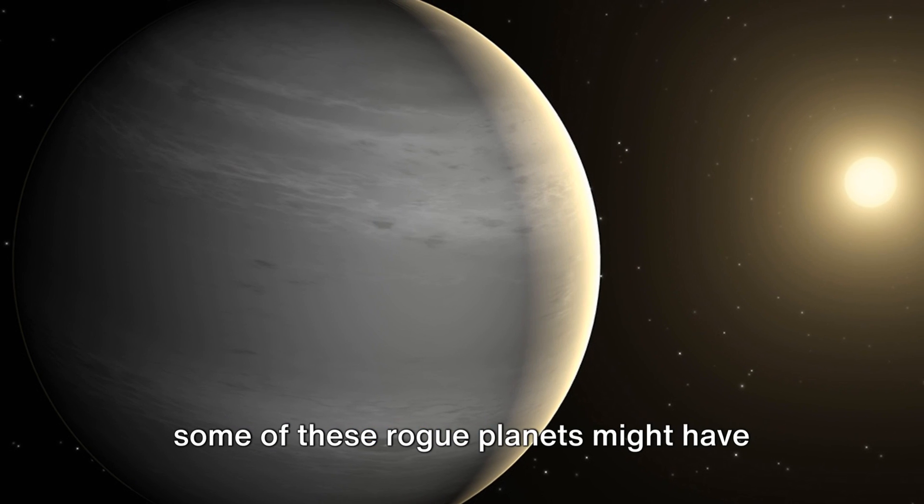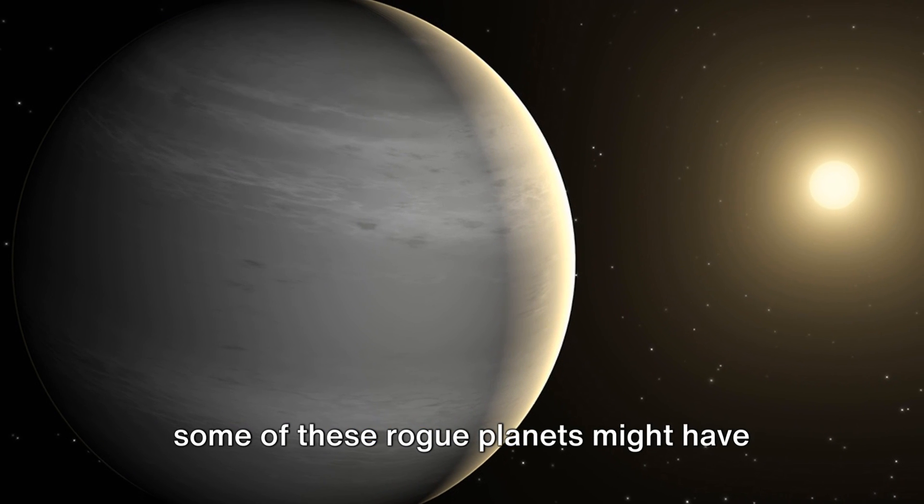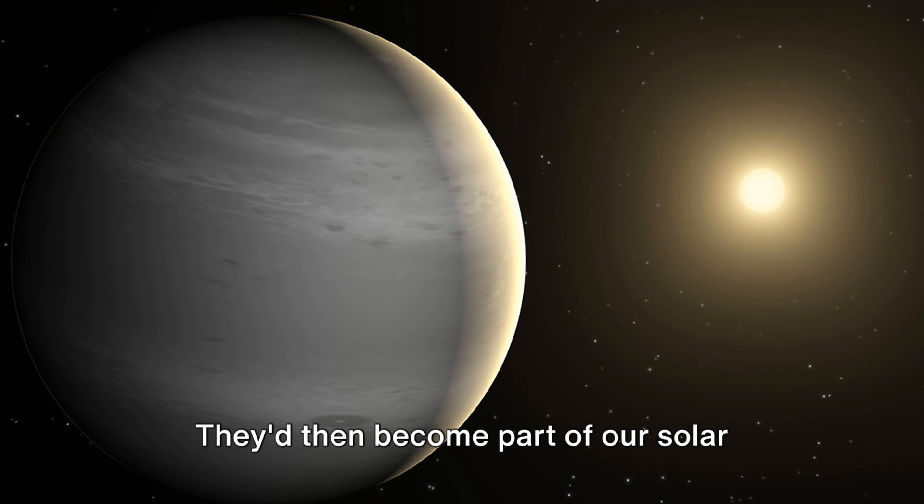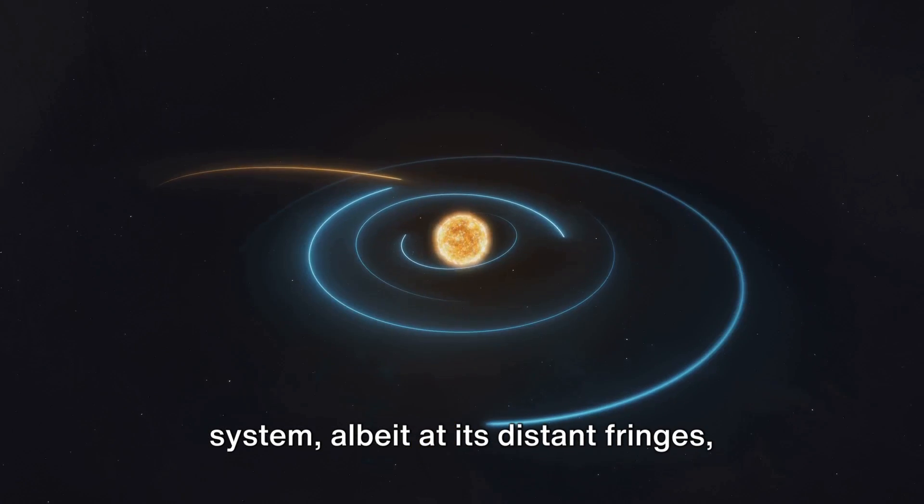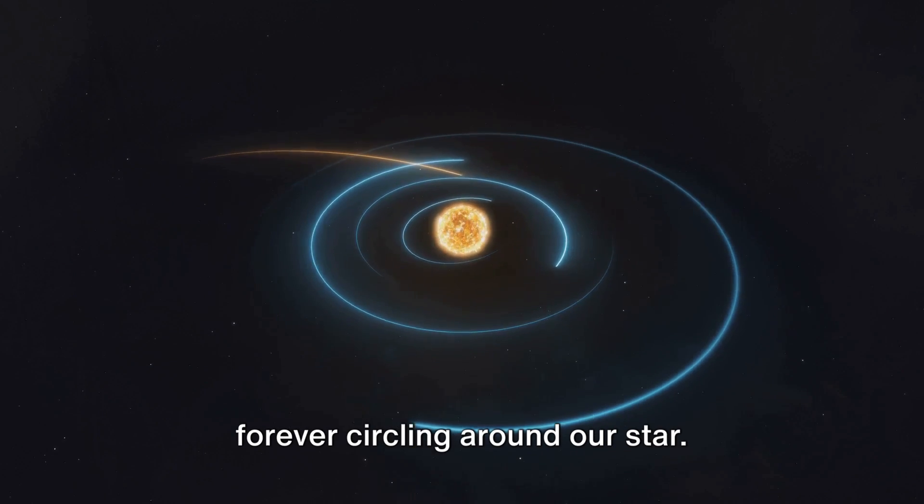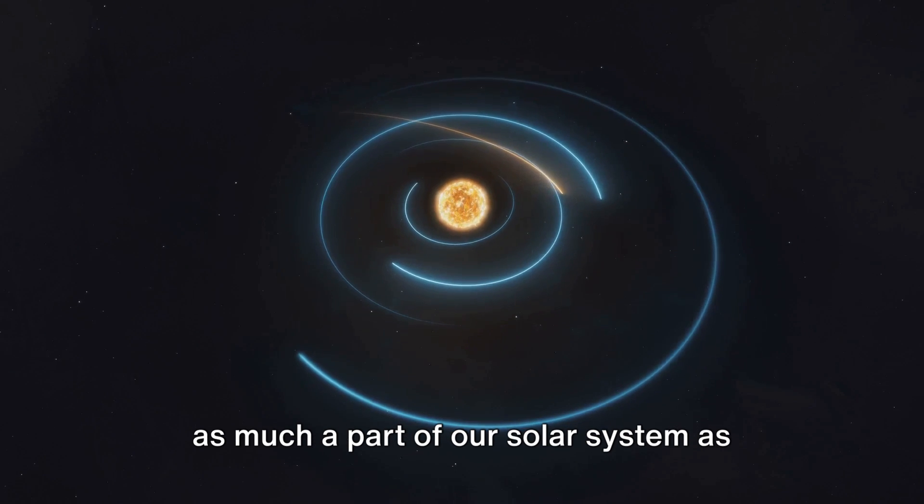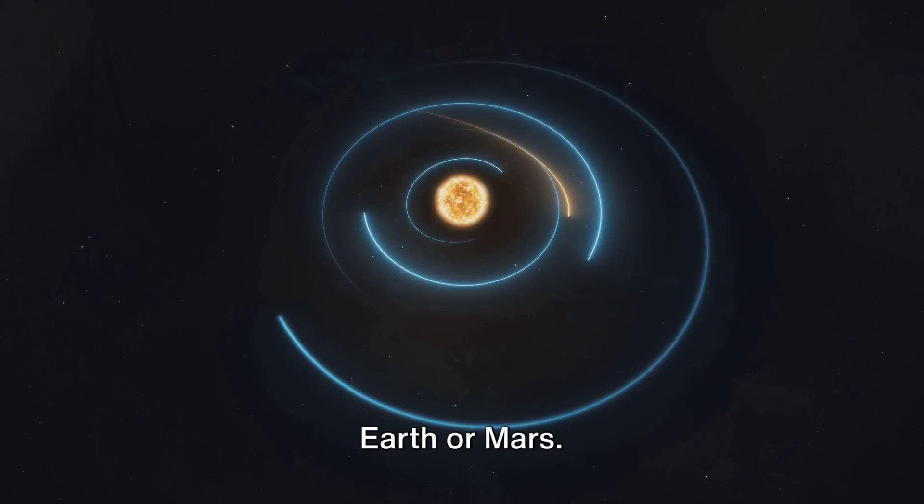As they journey through the cosmic dark, some of these rogue planets might have been captured by our sun's gravity. They'd then become part of our solar system albeit at its distant fringes forever circling around our star. And while they may hail from far-off stellar neighborhoods, they would now be as much a part of our solar system as Earth or Mars.